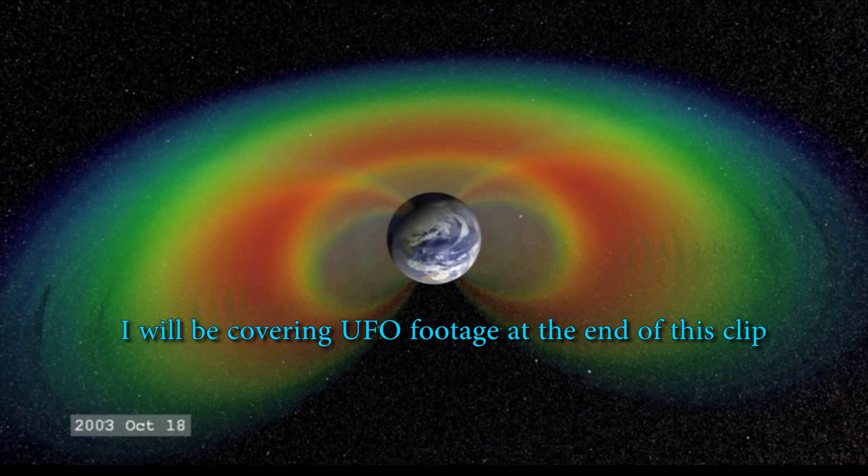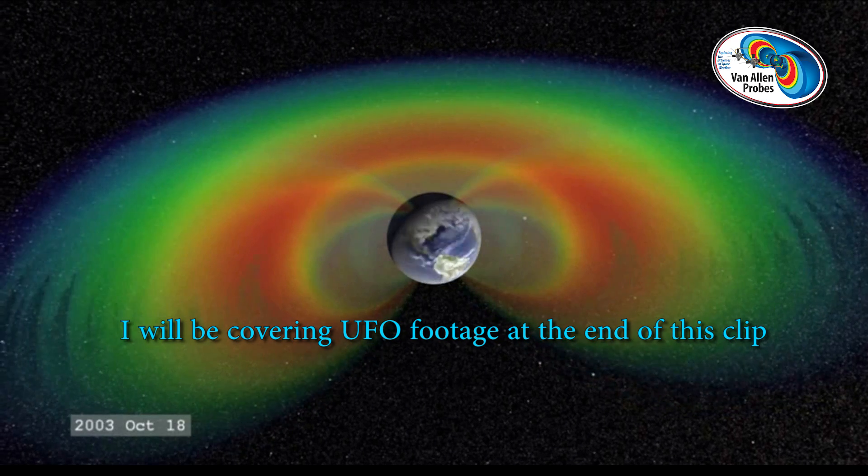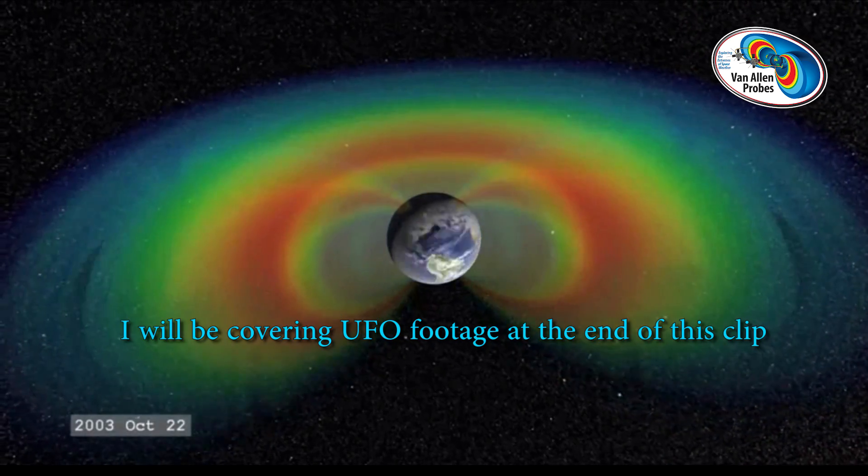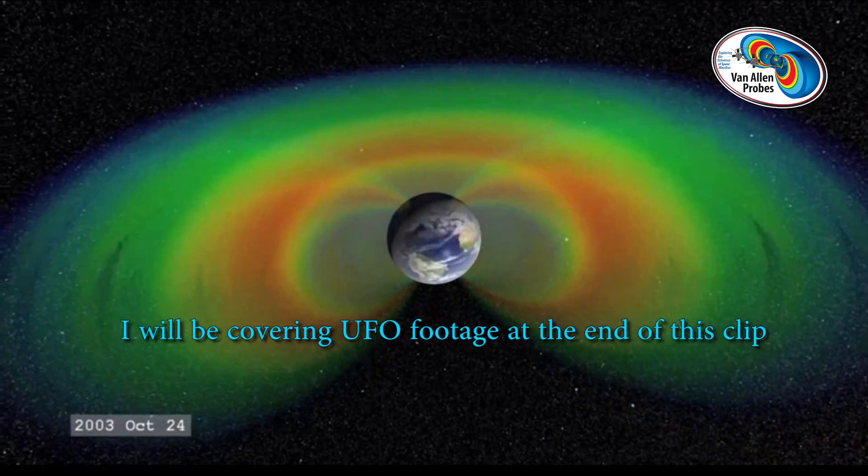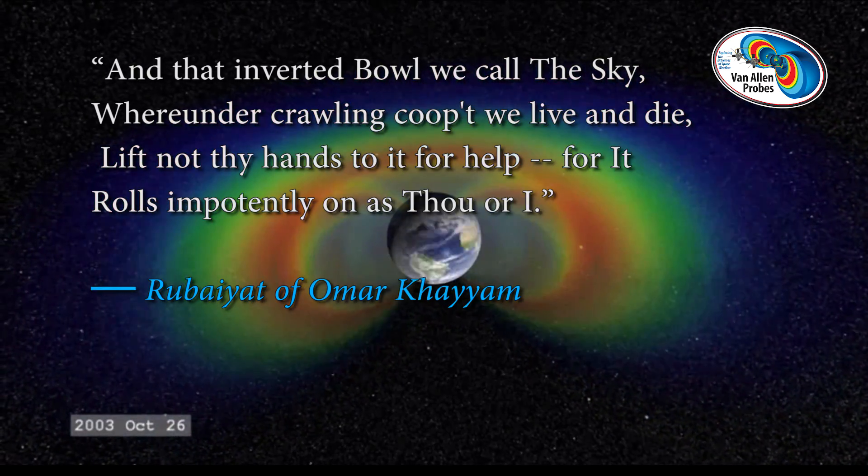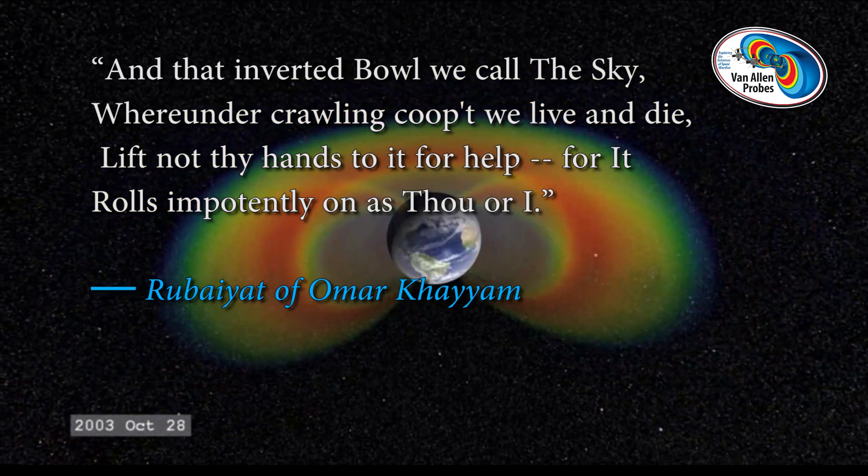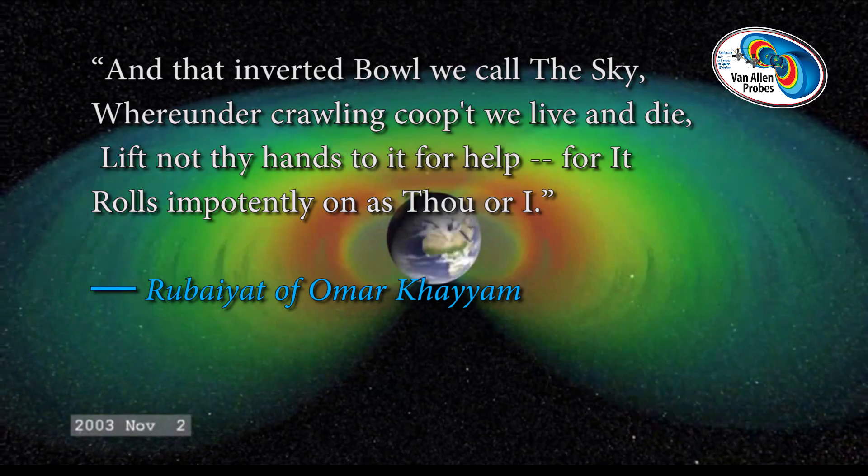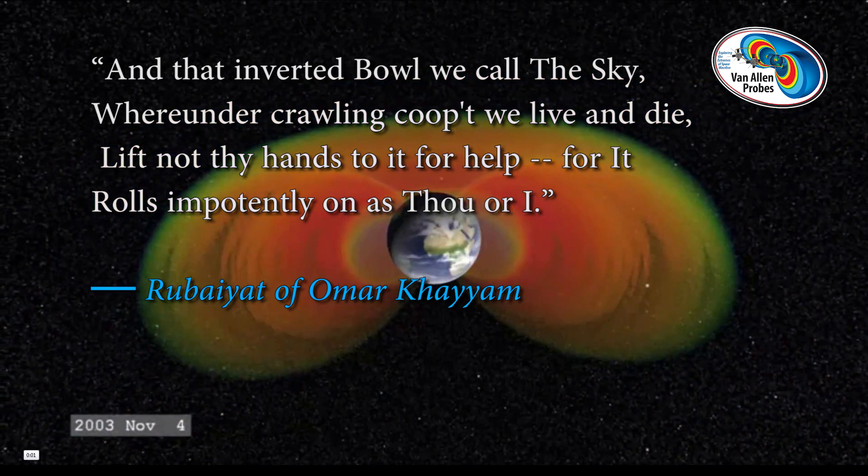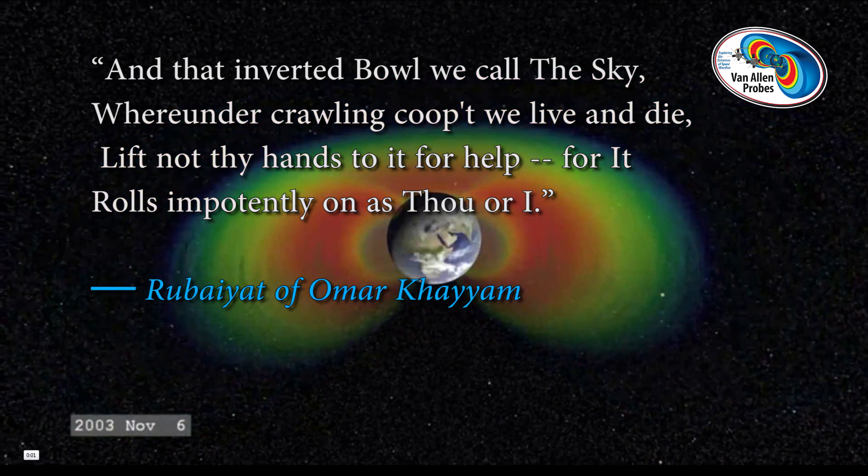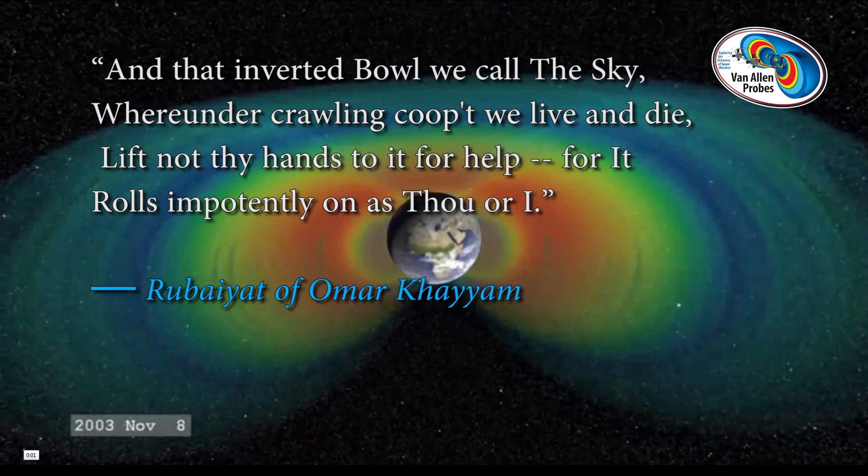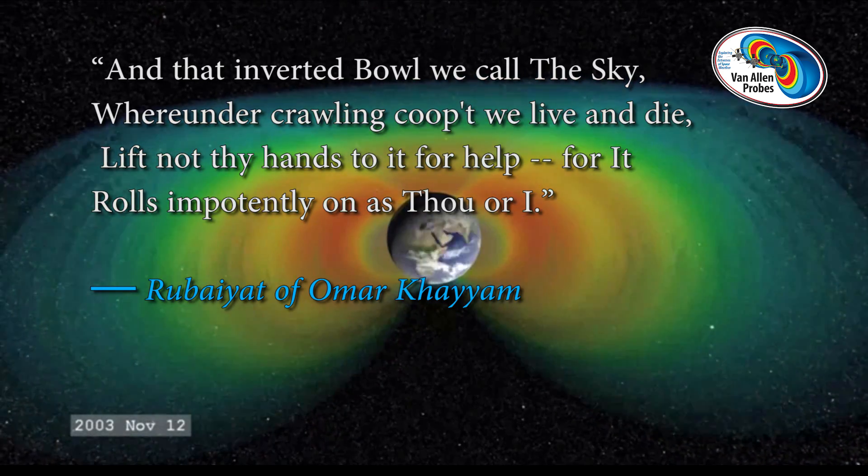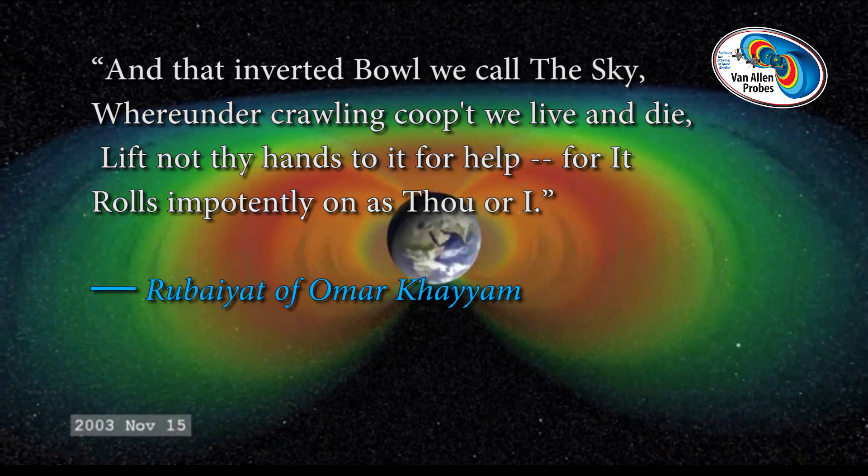Okay, welcome to the Crow Discovery Project. All the images used in this clip are from wiki commons, in the public domain and copyright free. What you're looking at here is the Van Allen belts. I'm going to put up some ancient text by ancient writers that talk about the dome of the sky, the firmament of the sky, and in this case an inverted bowl that we call the sky.